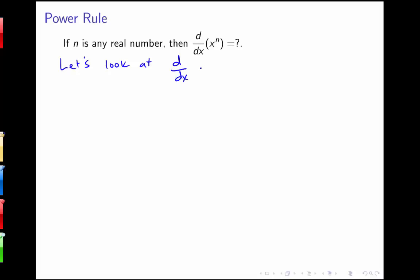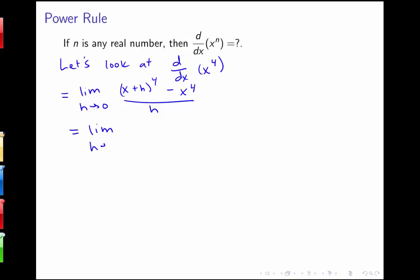Let's first consider the derivative of x to the 4th, because we want to try to see why this rule is true using the definition of the derivative. If I wanted to compute the derivative of x to the 4th using the definition, I'd be looking at the limit as h goes to 0 of (x+h)⁴ minus x⁴, all over h. So I'd have to multiply all of this out and then get some cancellation.